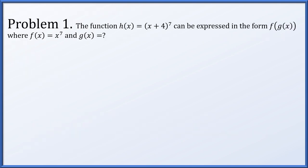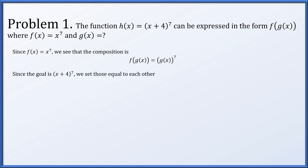First up, the function h of x equals x plus 4 to the 7th can be expressed in the form f of g of x, where f of x is x to the 7th and g of x is what we need to find out. Since f of x means whatever you plug in is raised to the 7th power, f of g of x equals g of x to the 7th. Setting that equal to x plus 4 to the 7th and taking 7th roots gives us g of x equals x plus 4.